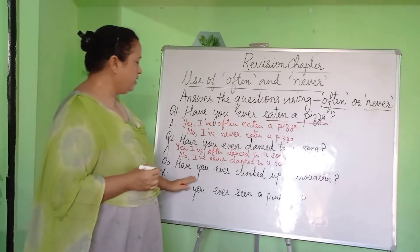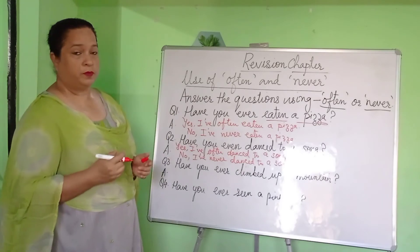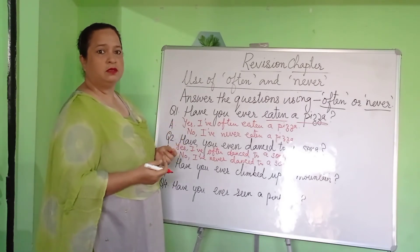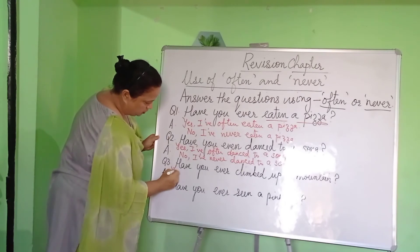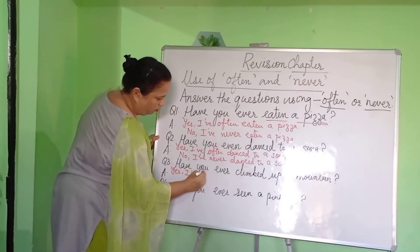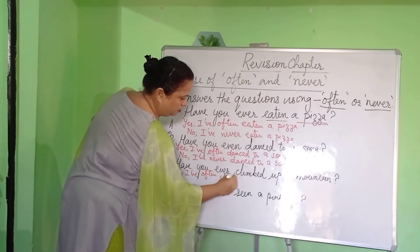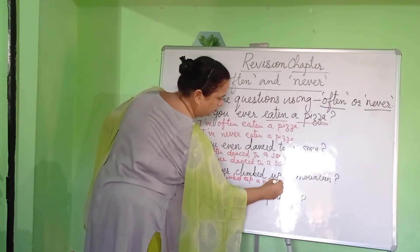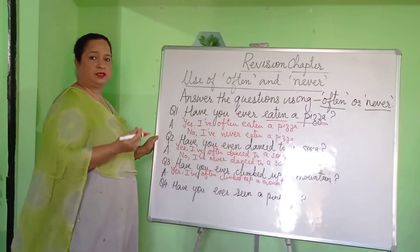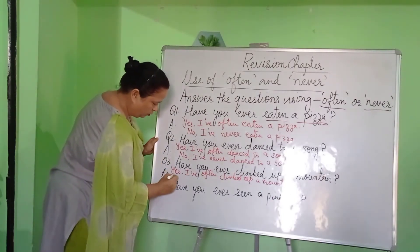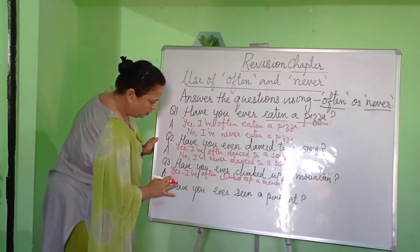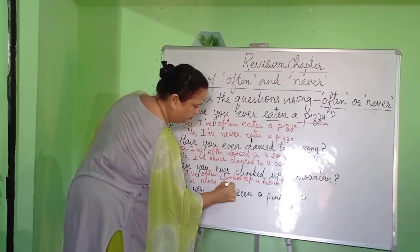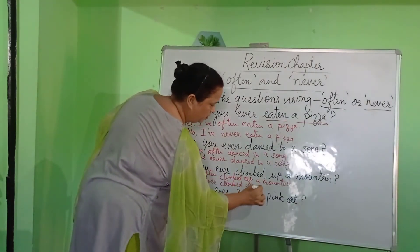Likewise, we have the next question. Have you ever climbed up a mountain? Many children like outdoor activities, and one of them would be this. If you have climbed a mountain, you will begin your answer using Yes: I have often climbed up a mountain. But if you do not like outdoor activities and never go trekking, you will begin with No. No, I have never climbed up a mountain.